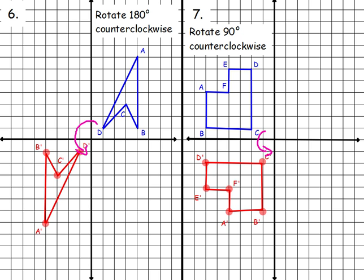So that was rotations. Remember the steps: step one, plot all the points of your original shape. Step two, draw an arrow to figure out what quadrant you're going to be in. Step three, rotate your paper the opposite way — so if you're rotating the shape 90 degrees clockwise, clockwise is to the right, meaning you rotate your paper to the left one turn. Step four, replot the points. Step five, turn it back to its original position and write down your new prime ordered pairs. Hope that helped — if you have any questions, please come in and ask.